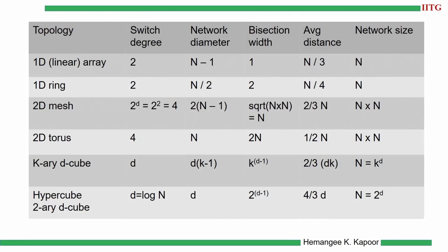A summary table lists all different topology parameters: switch degree (links per node), network diameter (maximum path), bisection width (links to remove for equal partition), average distance (empirical), and network size. For a linear array with n nodes: bisection width = 1, diameter = n−2, switch degree = 2.